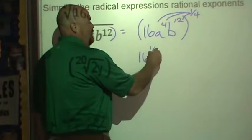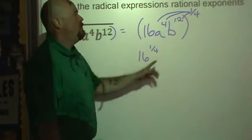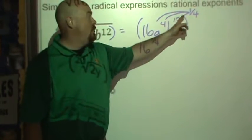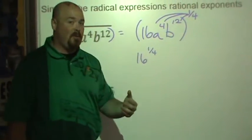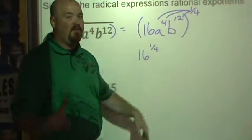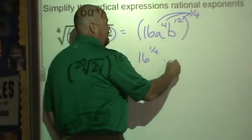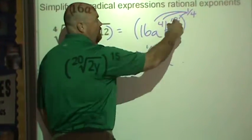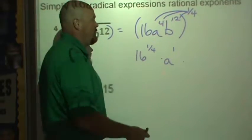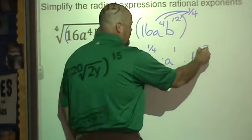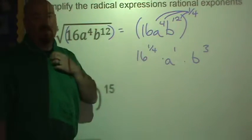So what we end up with is 16 to the one-fourth power. And what do we do with powers of powers or exponents of exponents? We multiply them. One-fourth times four is one, so I end up with a to the first. One-fourth times twelve is three, so I end up with b cubed.